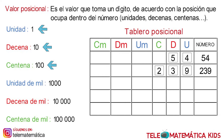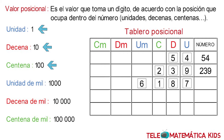Siguiente ejemplo, tenemos el dígito 7, el dígito 8, el dígito 1, y el dígito 6. Como el 7 corresponde a la columna de las unidades y estas tienen un valor de 1, conservamos el número 7. El valor 8, como se encuentra en la columna de las decenas y estas tienen un valor de 10, el número se transforma en 80. El valor 1, como se encuentra en la columna de las centenas y estas tienen un valor de 100, el número se transforma en 100. Y el valor 6, como se encuentra en la columna de las unidades de 1,000 y estas tienen un valor de 1,000, este se transforma en 6,000. Luego, sumando 6,000 más 100 más 80 más 7, el número sería 6,187.